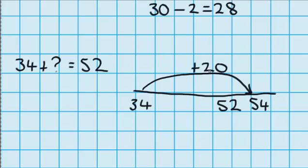Notice up here, I could have chosen numbers like 30 or 40, but they would have taken me a long way past 52. So 20 is the best choice, because it takes me just past 52.